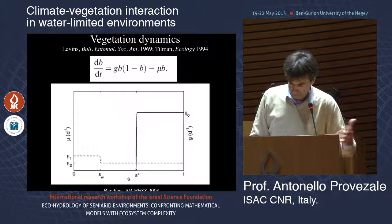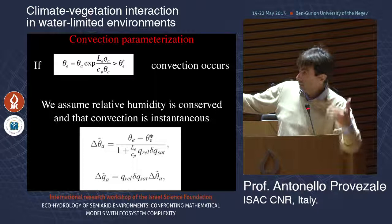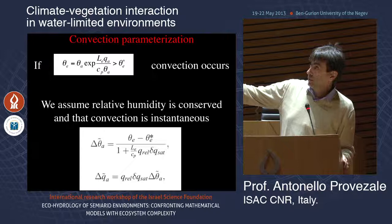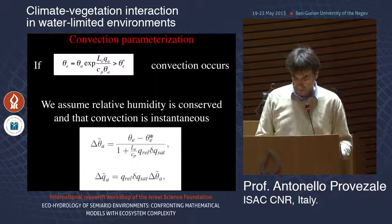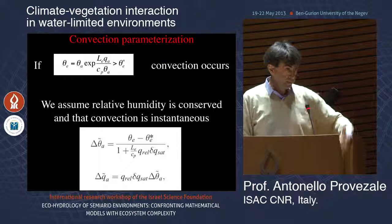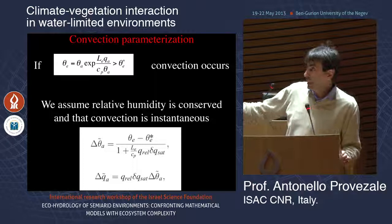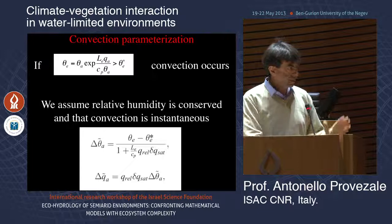On the convection parameterization: when the equivalent potential temperature of the PBL is larger than that of the troposphere — which is fixed in this model — you have convection. You basically homogenize the moist enthalpy, homogenize the equivalent potential temperature. But you need to make a choice because you have one equation and two variables: the heat transferred and the moisture transferred.